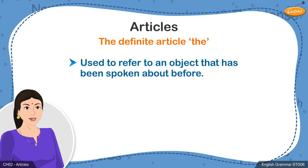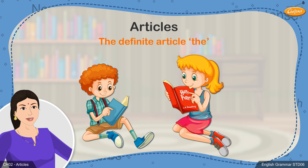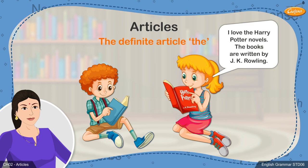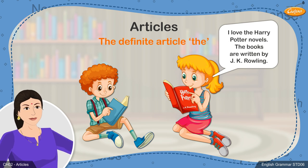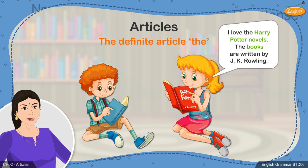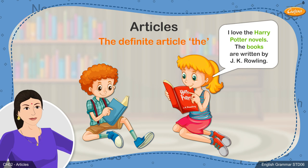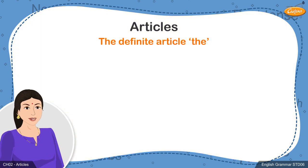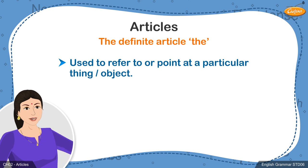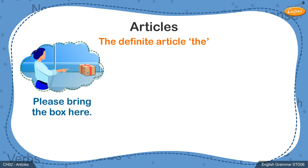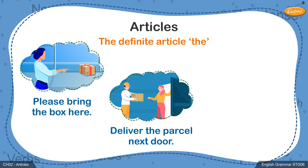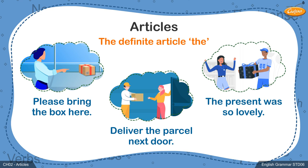Sometimes we may want to refer to the very specific thing or object that has been spoken about before. For example, two friends reading books — one tells the other: I love the Harry Potter novels. The books are written by J.K. Rowling. Here, the girl is talking about the novels she read and refers to the same books while she tells her friend they were written by J.K. Rowling. Hence the article the has been used before the common noun books in the second sentence. The definite article is also used to point at a particular thing: Please bring the box here. Deliver the parcel next door. The present was so lovely.